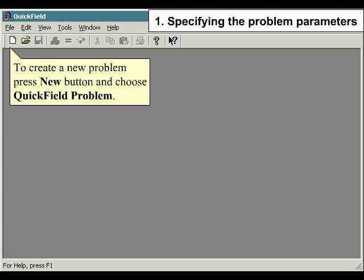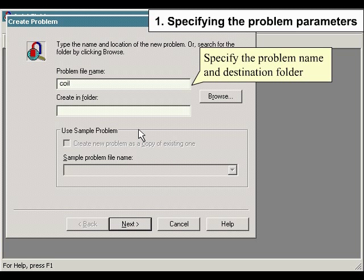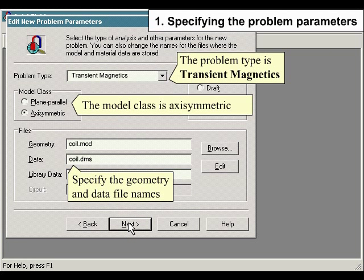Specifying the problem parameters. To create a new problem, press New button and choose QuickField Problem. Specify the problem name and destination folder. The problem type is transient magnetics. The model class is axiosymmetric. Specify the geometry and data file names.